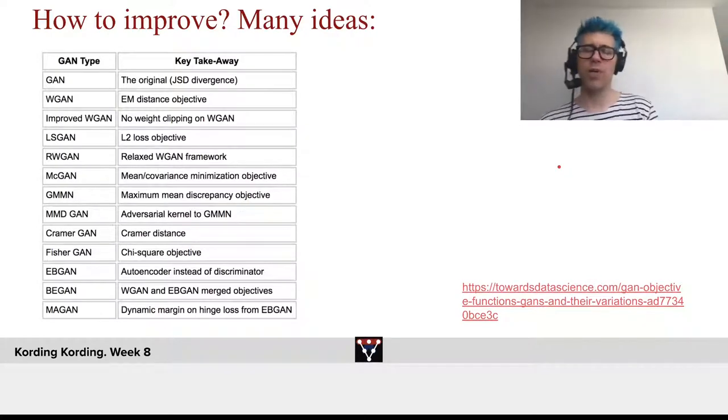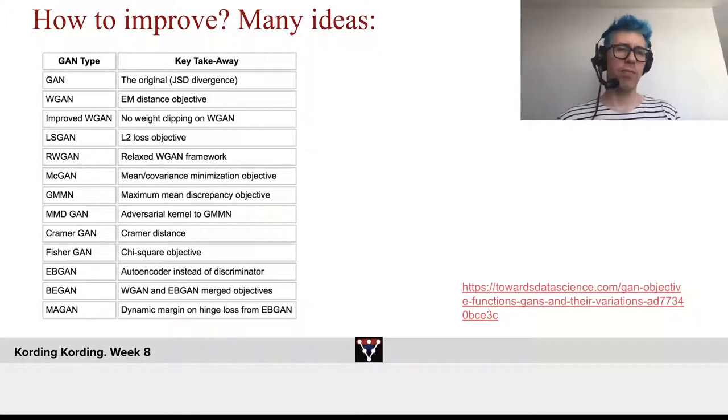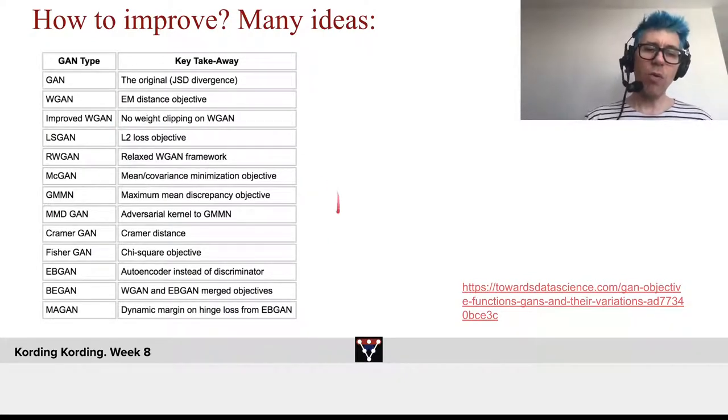How can we improve these problems with GANs? And how can we generally improve problems with mode collapse? Lots of people had lots of ideas there. We can use JSD divergence, we can use earth movers distance, we can do something about weight decay, we can give it an L2 loss objective. There's so many great ideas that people came up with on how we could make GANs better.